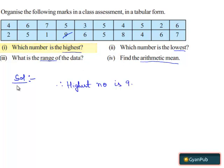Now for the second part, they have asked us to find which number is the lowest. When we observe from the tabular form, 1 is the lowest number. Therefore, the lowest number is 1.